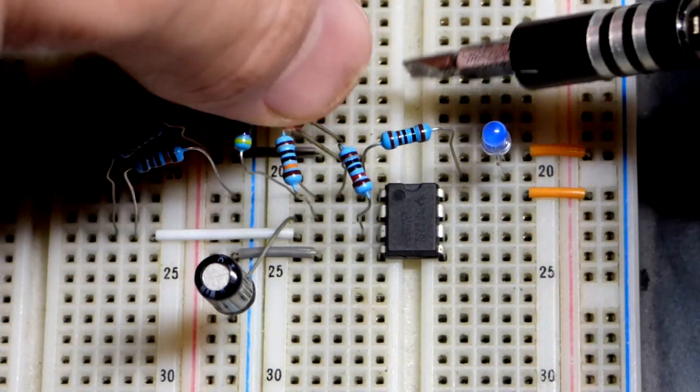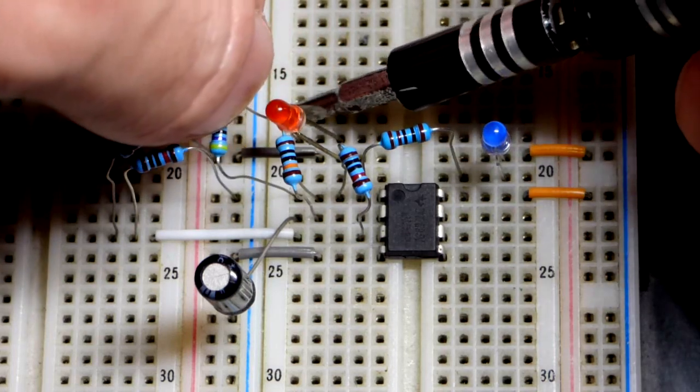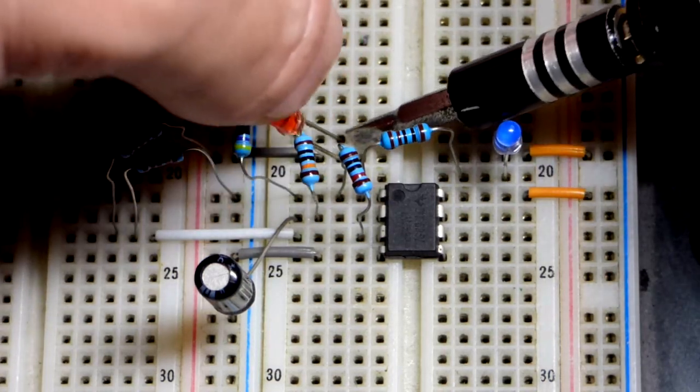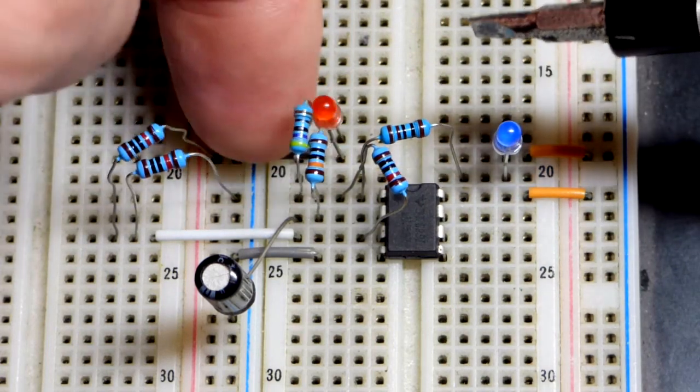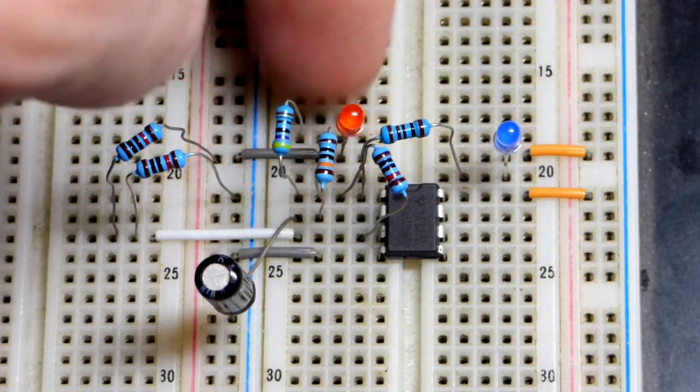I put the anode, the longer lead, up on top so the resistor comes above it down one row. Hopefully you can see that. There we have a gray jumper there that goes to the negative supply.